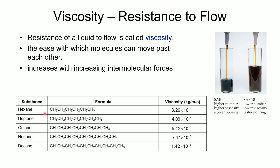Over here on the right side of the screen we've got two motor oils, and we find that the higher the number in the motor oil, the higher its viscosity. They are designed for different types of engines or different operating temperatures. Down here on this graph you can see hexane, heptane, octane, nonane, and decane — molecules of different sizes. As we get larger, we have stronger intermolecular forces, and you'll see that viscosity increases as we go down that list.